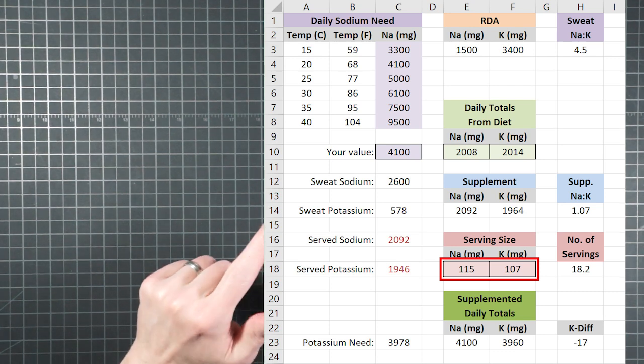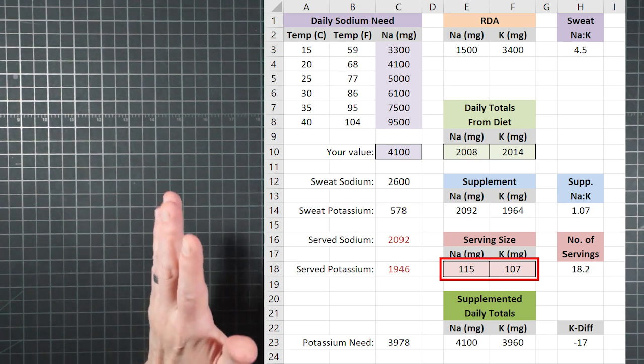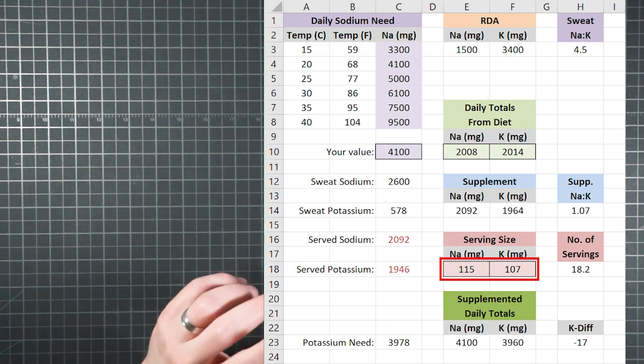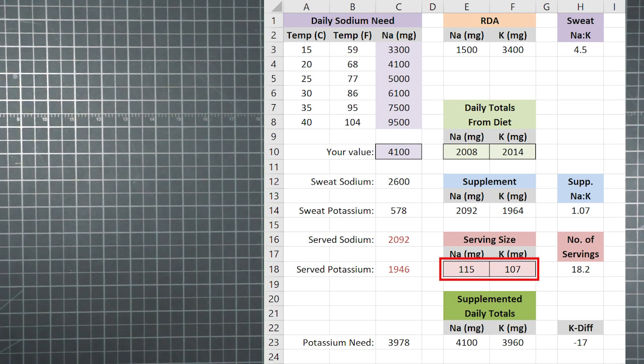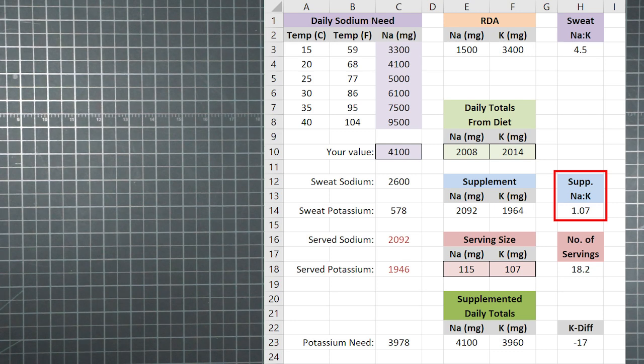And all you do is grab the numbers for sodium and potassium and pop them into the calculator where it says serving size. So the calculator will then figure out, based on the amount of sodium you need to supplement, how much potassium you end up getting along with that. Over here you can see those numbers displayed.